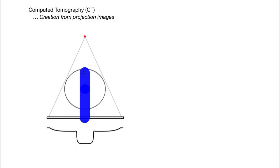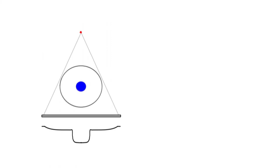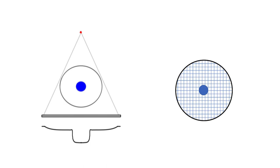You can't distinguish from a single projection whether it's a full line like a rod that's relatively low density, or just a single small circle that's higher density. So you can't distinguish with one projection, but if you take multiple projections, you can decompose it and figure it out. I'm going to break up this patient and represent it as a bunch of voxels — volume imaging pixels.